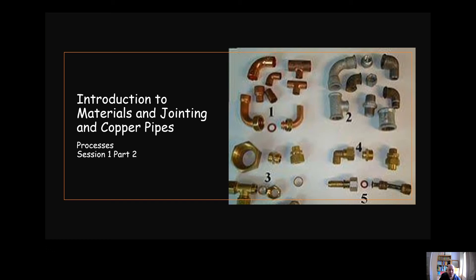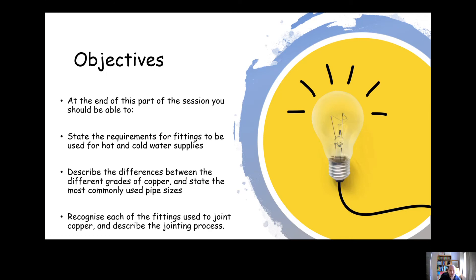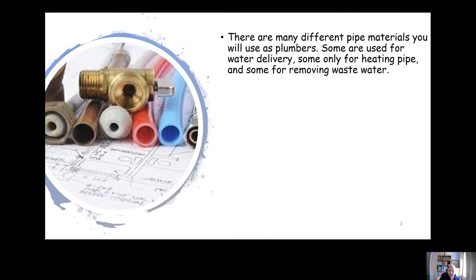Okay, processes session one part two. We're going to look at a short introduction to the different materials that we're going to work with, and most specifically jointing copper pipes. The objectives for this part of the session are for you to be able to state the requirements for fittings used for hot and cold water supplies, no matter what material, and describe the differences between the different grades of copper and state the most commonly used pipe sizes.